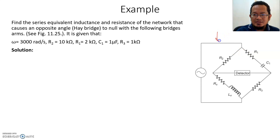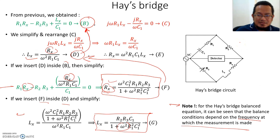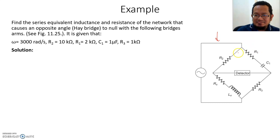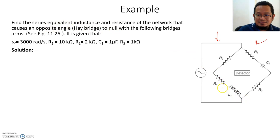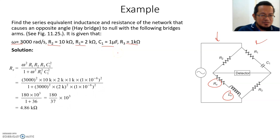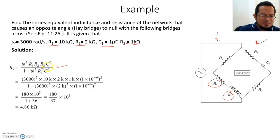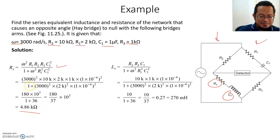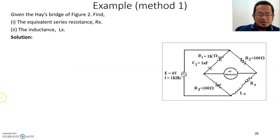Now let's look at an example. Here is a Hay's Bridge circuit — it may look a little different because C1 and R2 are on opposite sides, but it is essentially the same circuit just flipped around. The problem asks you to find the equivalent inductance Lx and resistance Rx, given the frequency, resistances R1, R2, R3, and capacitance C1. Using the derived formulas, plug in the values and calculate.